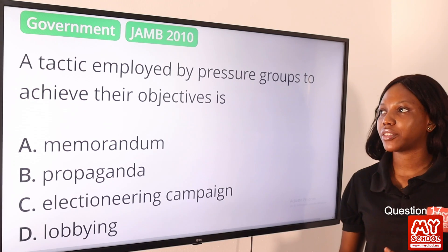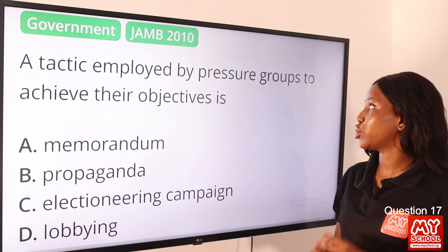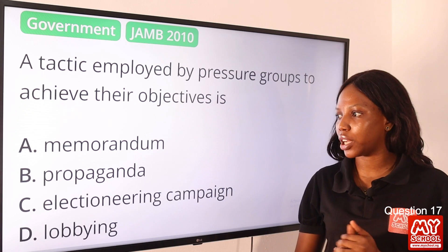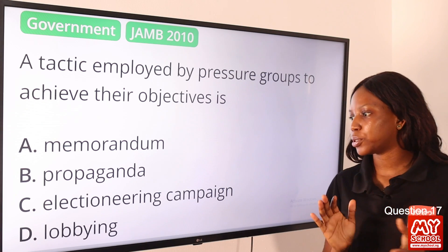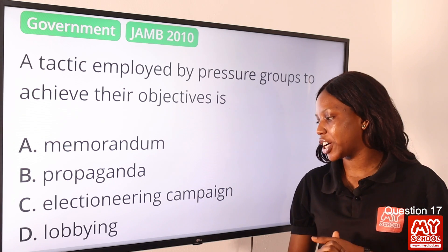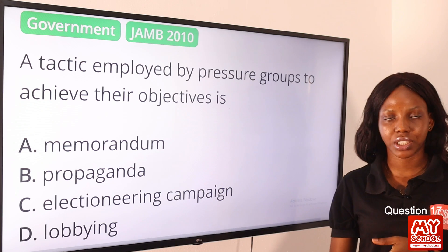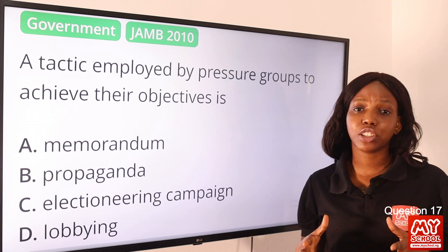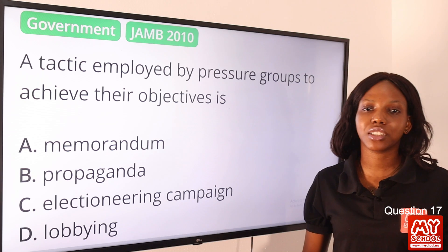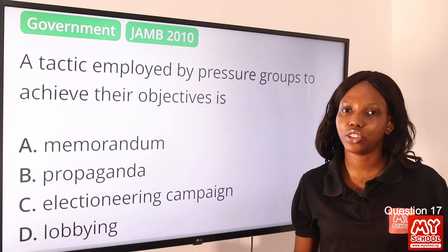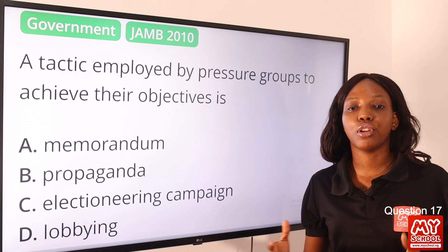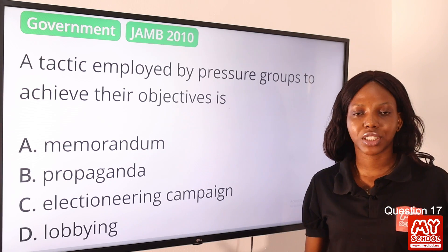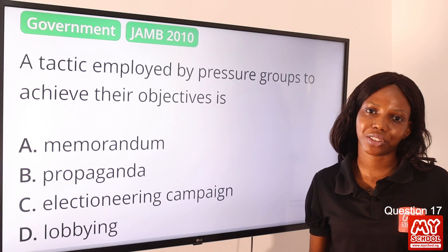Question 17: A tactic employed by pressure groups to achieve their objective is — option A, memorandum; option B, propaganda; option C, electioneering campaign; option D, lobbying. The answer is lobbying. Pressure groups seek to influence government decisions and they do that through lobbying. Lobbying means to seek to influence. So option D is the final answer.